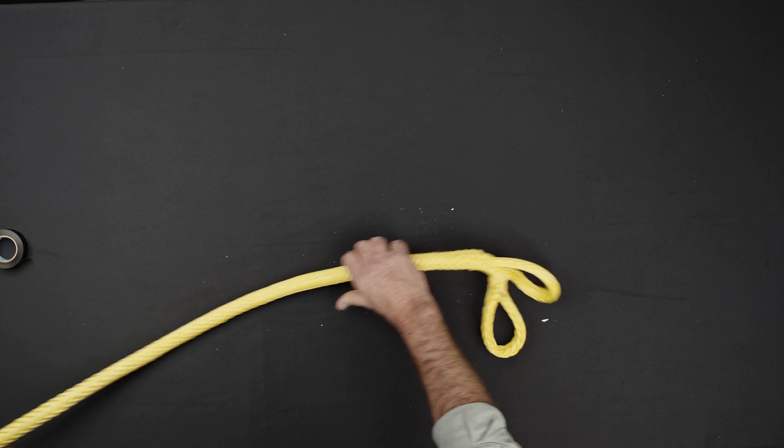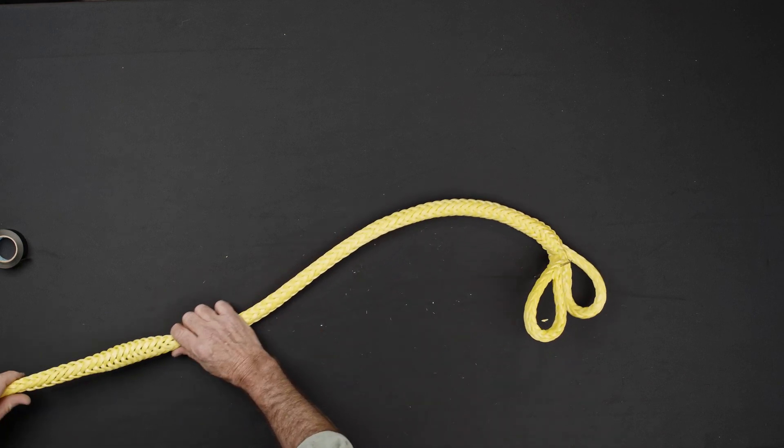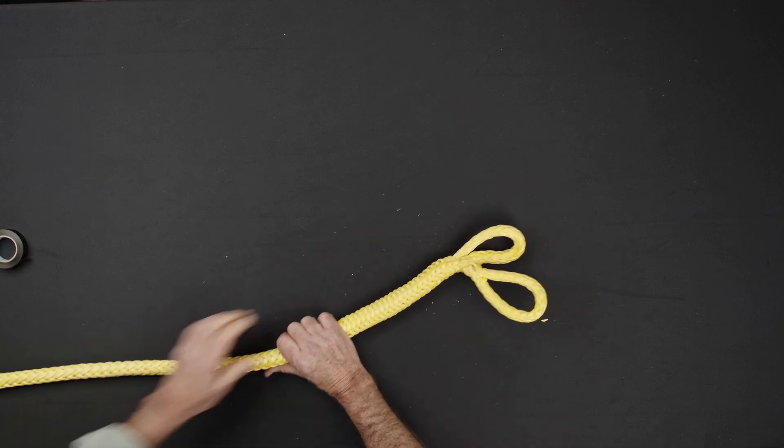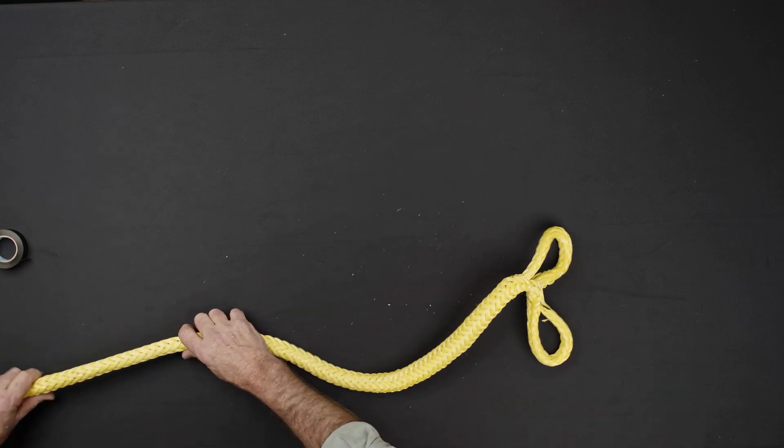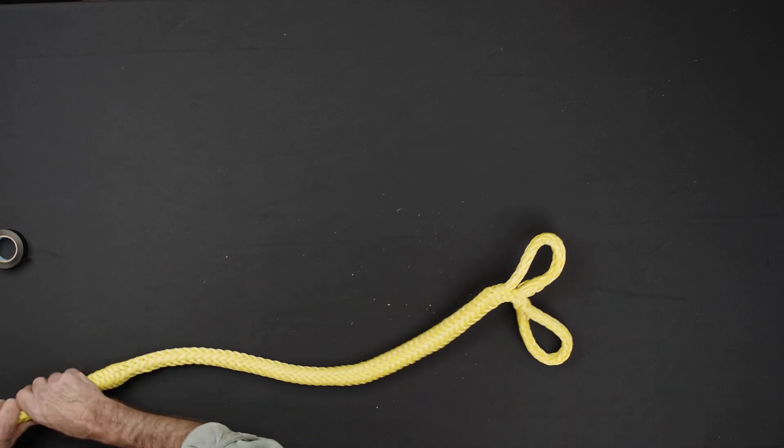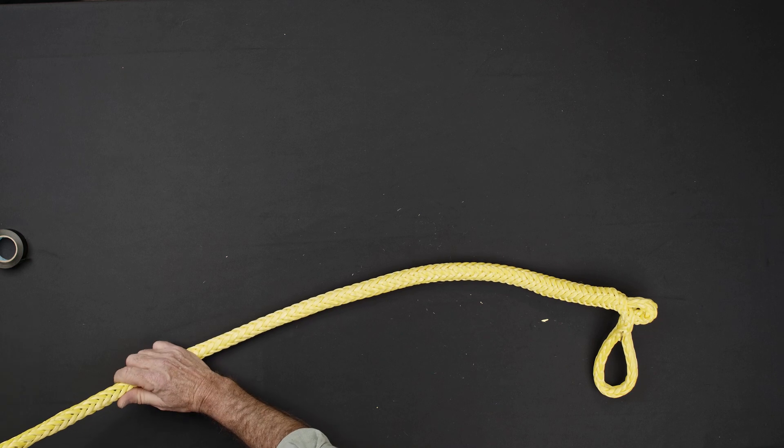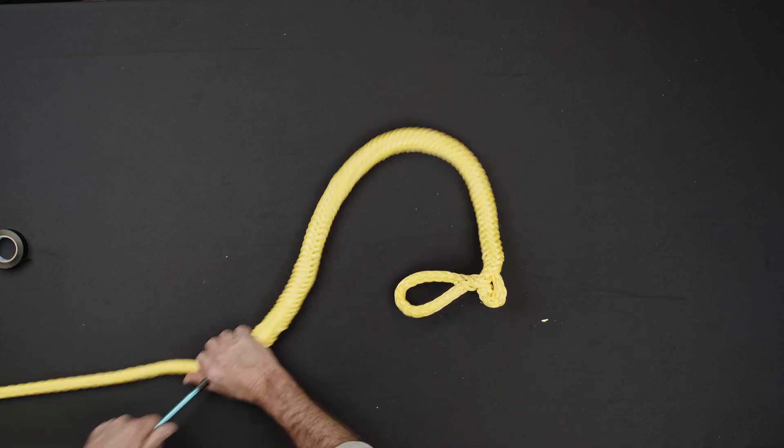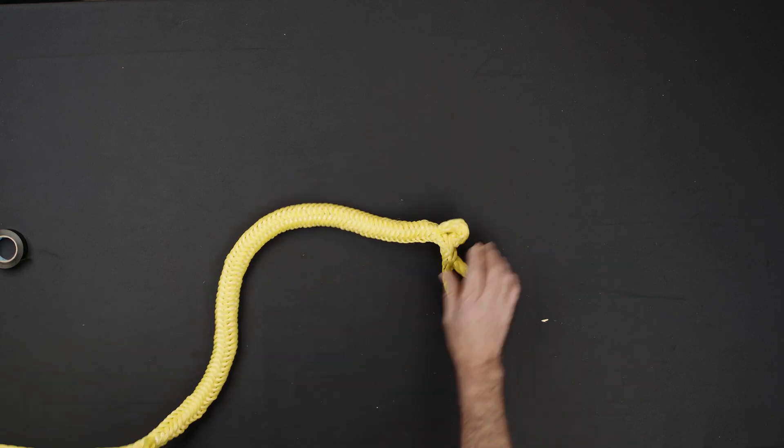Continue passing the fit through the hollow center of the rope until the entire tail is buried. Be careful not to catch or snag any of the strands on the interior of the rope. Extract the fit from the side of the rope and pull the tail tightly to completely bury the tail.